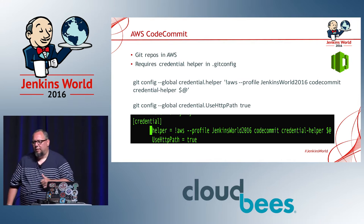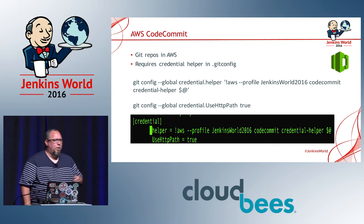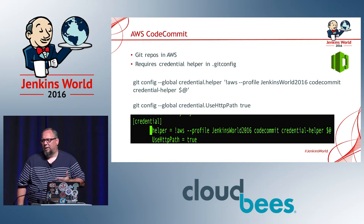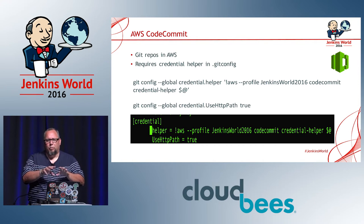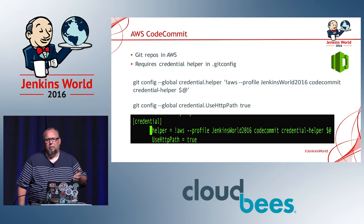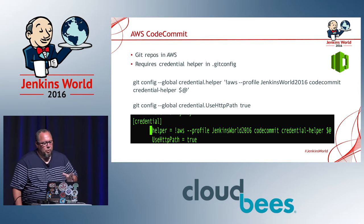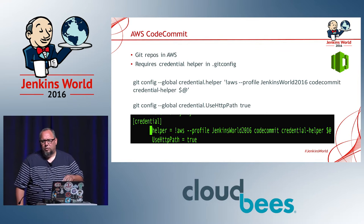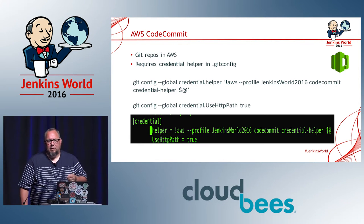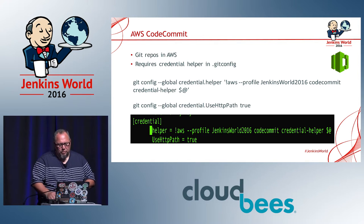CodeCommit is essentially a Git repository. Though when you look at CodeCommit, it is nowhere near as functional as GitHub — in GitHub you can make edits right there in the repo, with CodeCommit not so much. But you can use your Git client calls like you would with any other GitHub repo. It requires your credentials to be set up and uses a credential helper to allow your Git to contact the AWS CLI and CodeCommit.